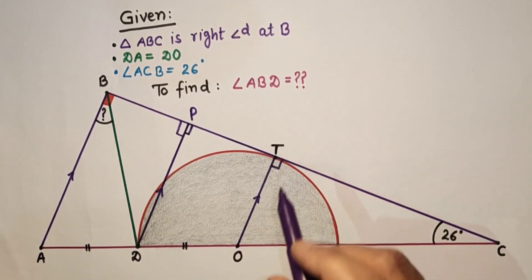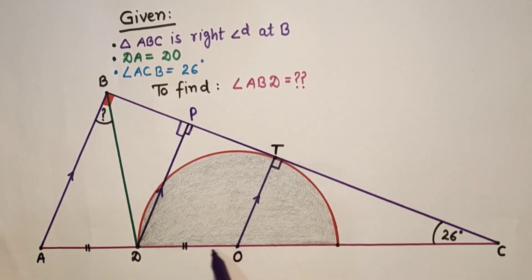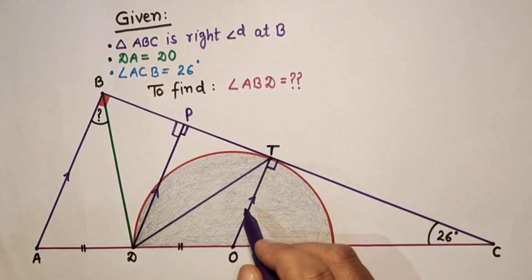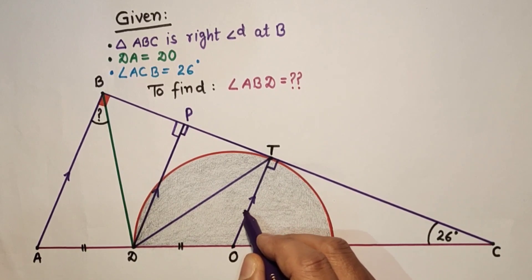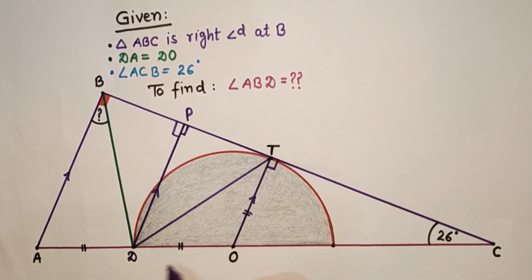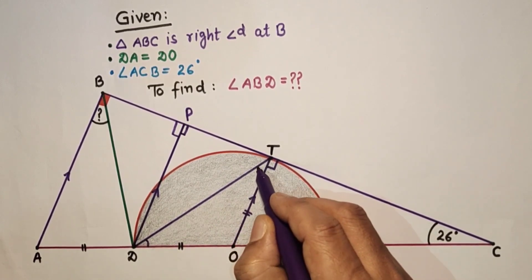OD is equal to OT. Since this is the center and OD and OT are radii. If we join DT, these OD and OT are equal. Therefore, this is an isosceles triangle and hence we can say these two angles are equal.